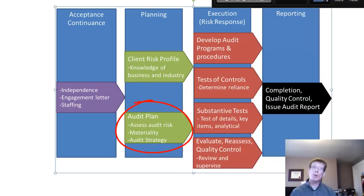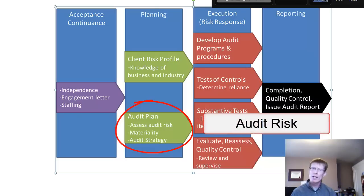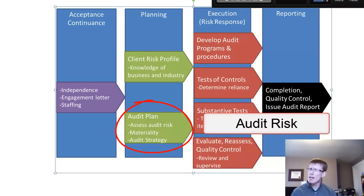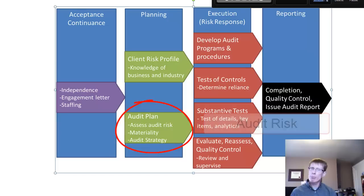The formal planning incorporates the client risk profile analysis into an assessment of what is called audit risk. Audit risk is the risk that we issue an unqualified opinion — a clean opinion — when in fact there are material misstatements contained within the financial statements. In other words, we get it wrong. We obviously want to minimize this risk to the extent possible under cost-benefit constraints. Note that you cannot eliminate audit risk, only minimize it.